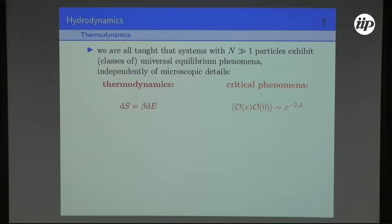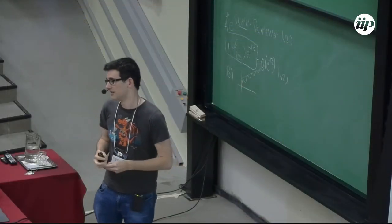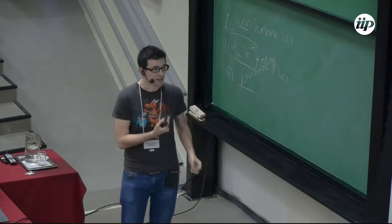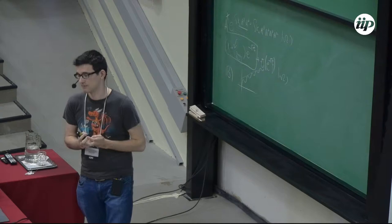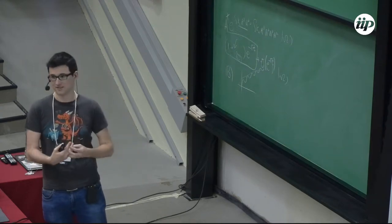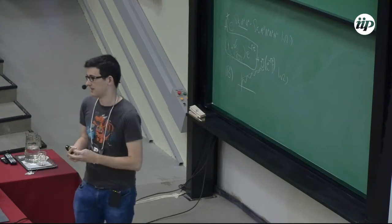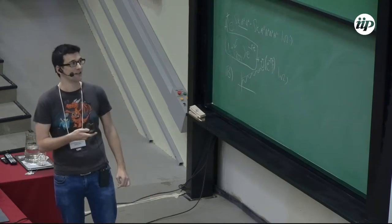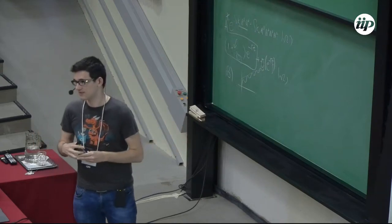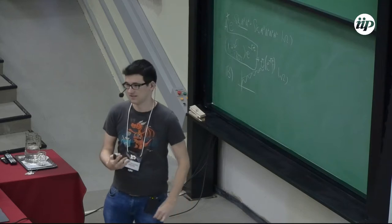We're all taught in the first statistical mechanics course that systems with a large number of degrees of freedom exhibit universal phenomena independent of microscopic details. We organize theories by their universality class for understanding properties of the ground state. This has been a very successful program in understanding statistical mechanics over the past century, and even more elementarily we have thermodynamic methods to characterize many-body systems in terms of measurable objects.